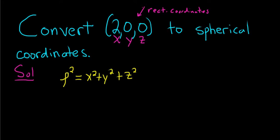We use this formula to find rho. We know that the tangent of theta is equal to y over x. And the last formula is that phi is equal to the arc cosine of z over the square root of this.